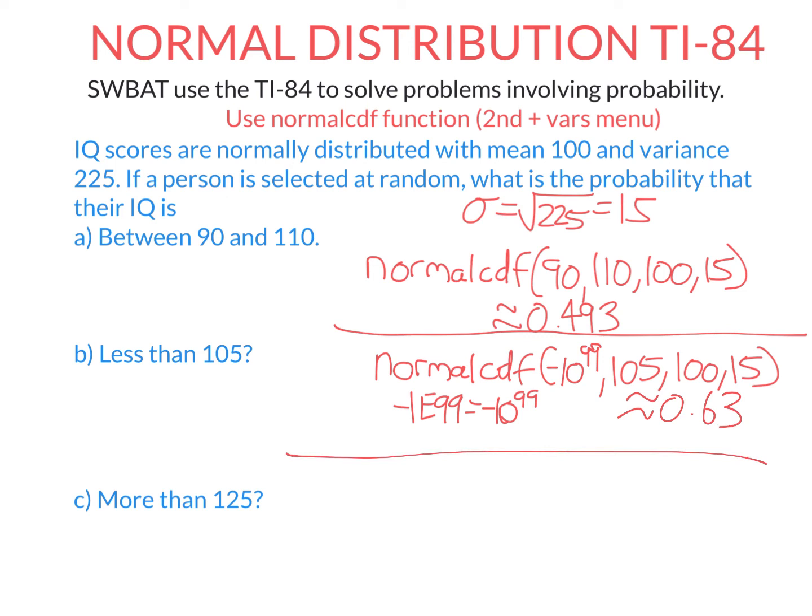All right, let's do this final one. What is the probability that a person has an IQ score more than 125? Well, we know we're going to use normal CDF again. And this time, the lower limit is 125. So when you're doing more than questions, we're gonna put as the upper limit, positive 10 to the power of 99. This is the largest number your calculator can store. This is like our version of infinity. More than 125 means the scores can be 125 to infinity. So then we again put mean 100, standard deviation of 15.